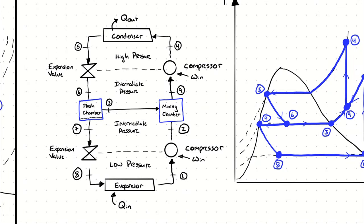In this cycle, we have a high pressure at which our condenser operates. Then we expand to an intermediate pressure where the stream is split. Some of it — the vapor — goes into the mixing chamber. The rest — the liquid — goes down into a low pressure refrigeration cycle. On the low pressure side, we have a low pressure at which our evaporator operates, and then two compressors: one taking it from low pressure to intermediate pressure, and one from intermediate pressure to high pressure. Note that these nine state points have different mass flow rates. There is one mass flow rate at 9, 4, 5, and 6. There is some mass flow rate at 7, 8, 1, and 2. And the mass flow rates at 2 and 3 must sum together to equal 9.